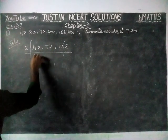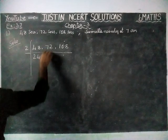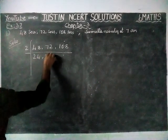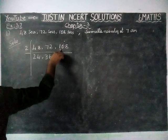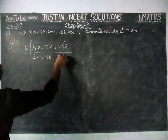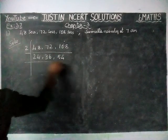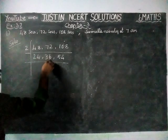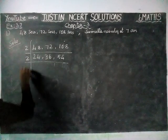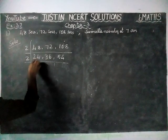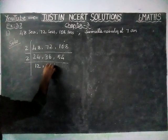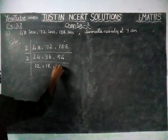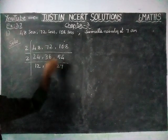2 twos are 4. 4 twos are 8. In 72, 2 twos are 6, remaining 1; 6 twos are 12. In 108, 5 twos are 10; 4 twos are 8. Now we divide again — here we have 4, 6, 4. We can divide by 2 again. 12 twos are 24, 18 twos are 36, 27 twos are 54.